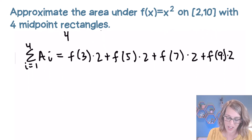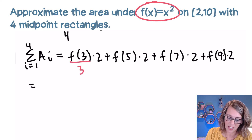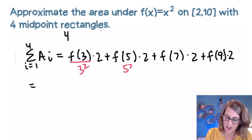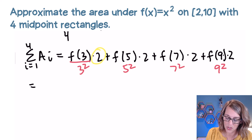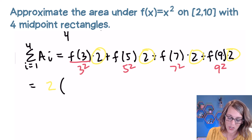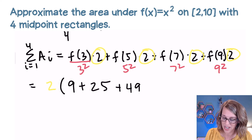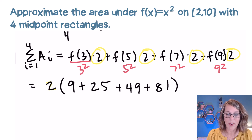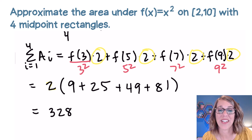Since our function is x squared, I'm squaring each midpoint: 3 squared, 5 squared, 7 squared, and 9 squared. I can factor out the common 2 to make things easier. So I have 2 times the sum of the heights: 3 squared is 9, 5 squared is 25, 7 squared is 49, and 9 squared is 81. Multiplying by that 2, I end up with an area of 328.